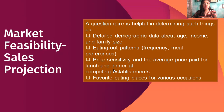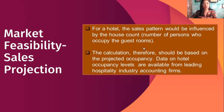The data questionnaire consists of demographic data about the incoming family, eating patterns, frequency of preferences, price sensitivity, the average prices for lunch and dinner, and favorite choices for various situations. For hotels, the sales pattern will be influenced by the house count — the number of persons who occupy the guest room — and the calculation should be based on projected opportunities.